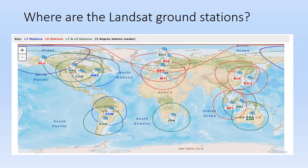Where does the information come from when it leaves the satellites? The information goes down to a variety of ground stations. At these individual ground stations the information is collected from the satellites as they pass within range, and then everything is transmitted to the EROS Data Center in Sioux Falls, South Dakota.